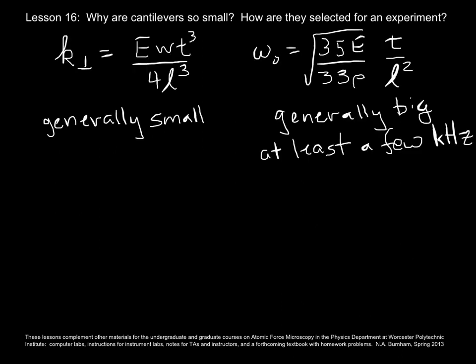Here are the two important equations in this lesson, that of the spring constant in the normal direction and the resonant frequency of that spring constant. In selecting a cantilever for the spring constant, you would be thinking about range and resolution. So if you want to apply a large range of forces, then you need a bigger spring constant. If you want good force resolution, you would want a smaller spring constant.